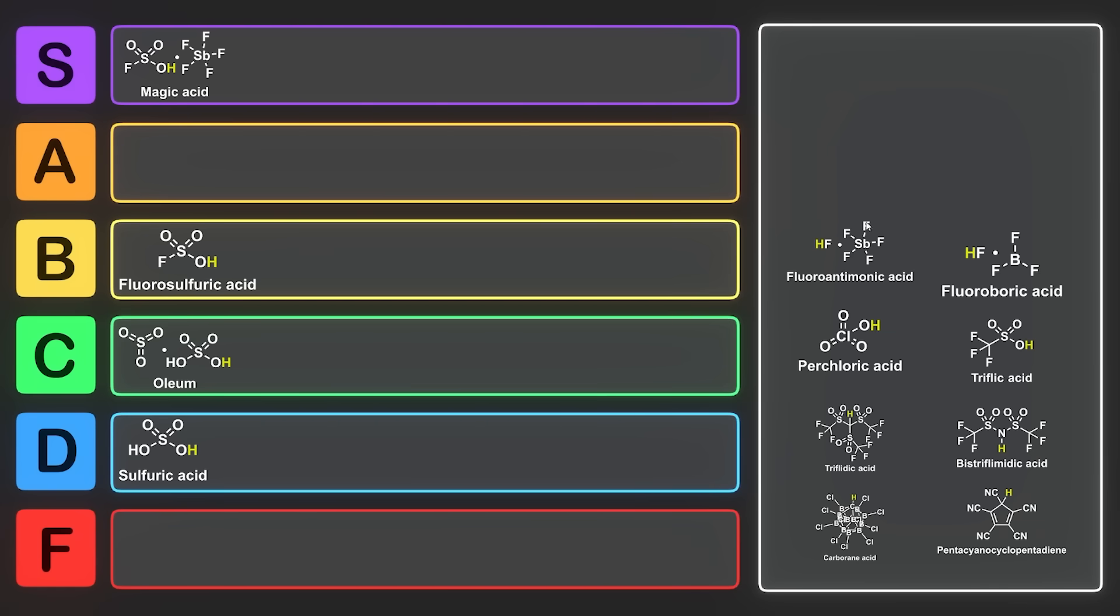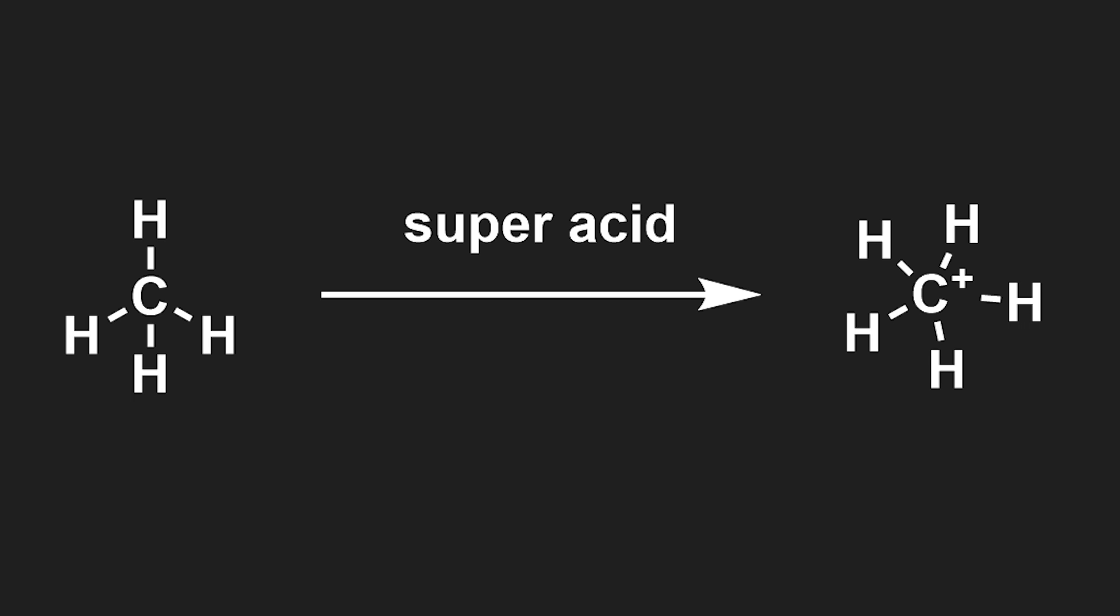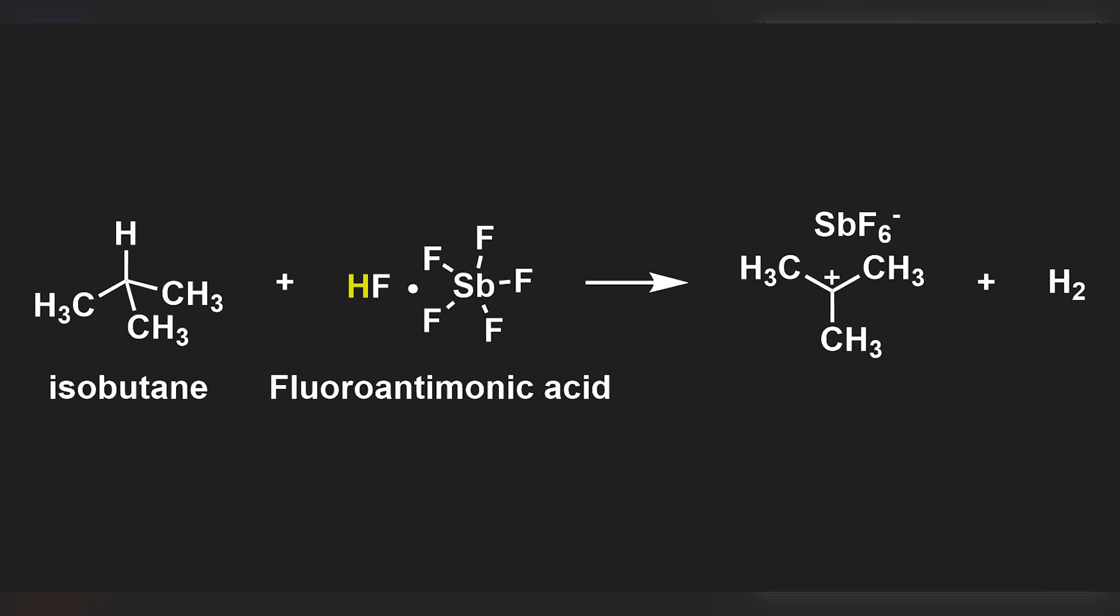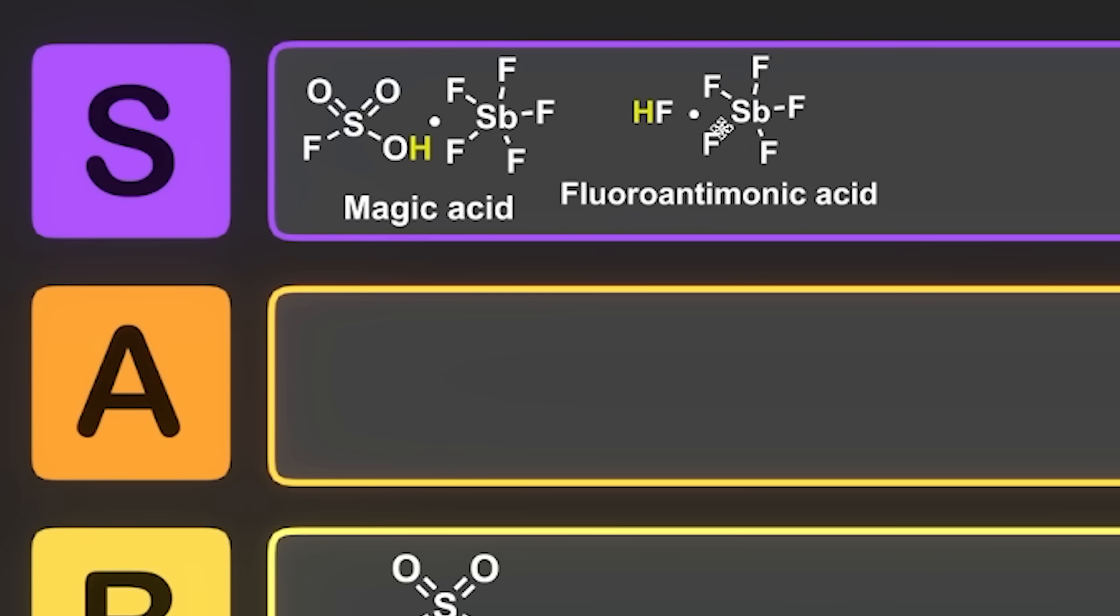Fluoroantimonic acid though. This is another crazy strong one. It's made by mixing HF and antimony pentafluoride, also terrifying. And this one's also capable of protonating methane. One of the cool things you can do with this is, if you have an alkane such as isobutane, you can just protonate the CH and make the tert-butyl carbocation and hydrogen gas. So this is so acidic, it will protonate one of the hydrogens of the alkane and make hydrogen gas. That is terrifying. Right into S tier.